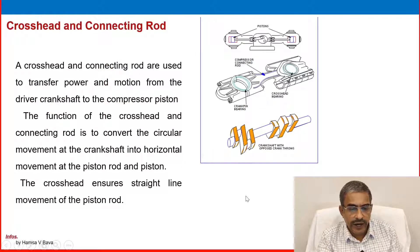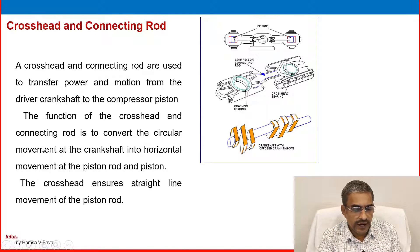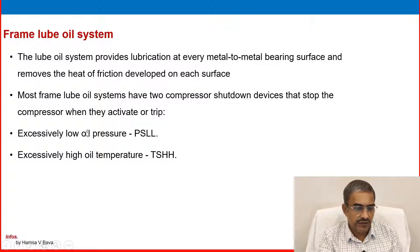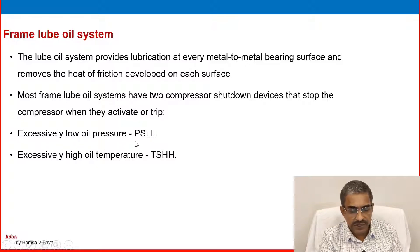The cross head and connecting rod are used to transfer power and motion from the driver crankshaft to the compressor piston. Their function is to convert the circular movement at the crankshaft into horizontal movement at the piston rod and piston. The cross head ensures straight-line movement of the piston rod. The frame lubrication system provides lubrication at every metal-to-metal bearing surface and removes heat of friction. Most frame lube oil systems have two compressor shutdown devices: an excessively low pressure switch (PSLL) and an excessively high temperature switch (TSHH).